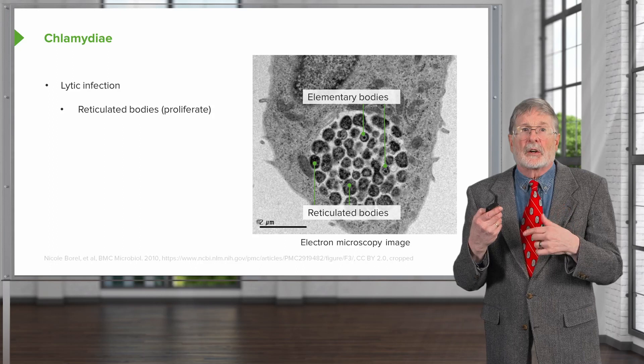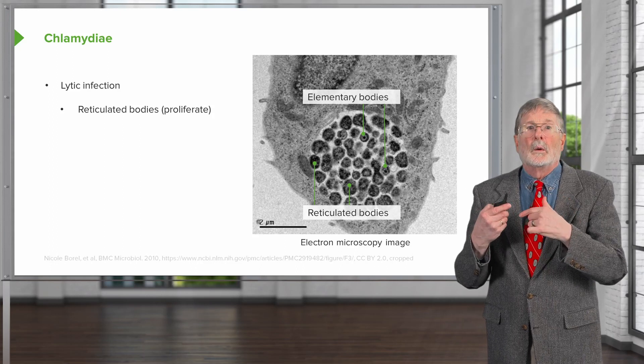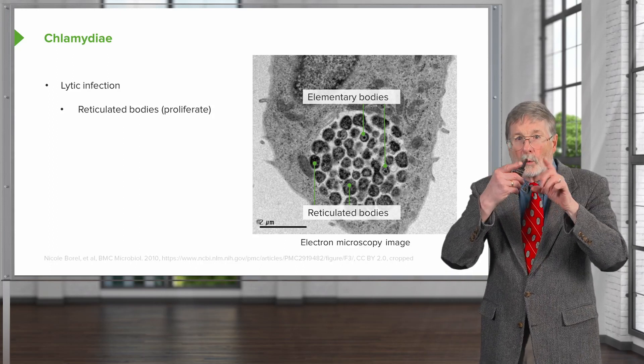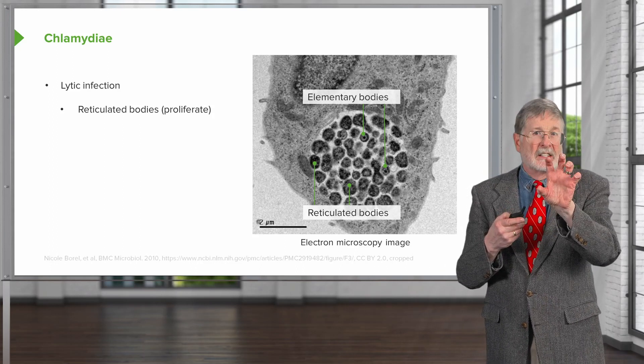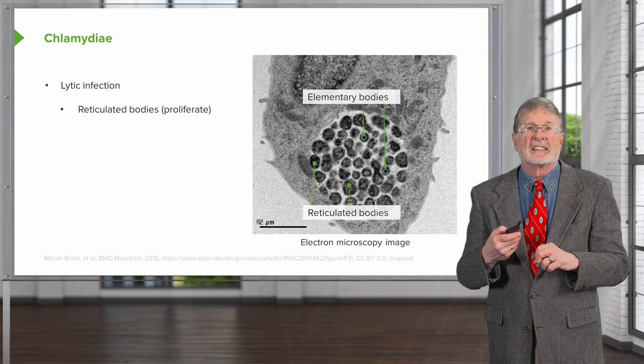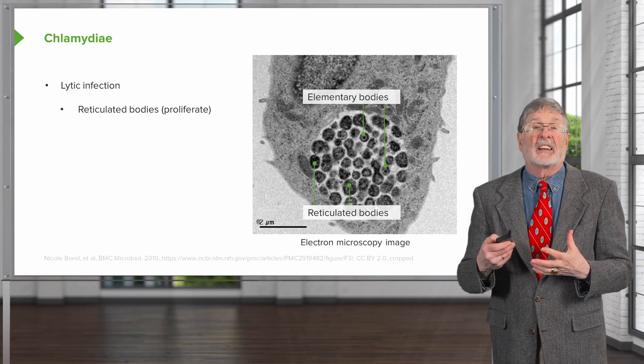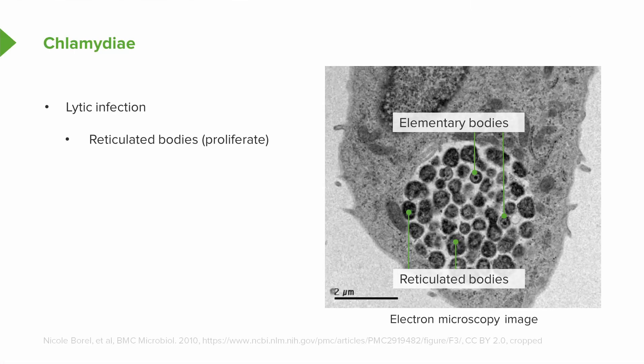The lytic infection occurs when it grows within the cell, as you can see on the right-hand side — reticulate bodies. These reticulate bodies are slightly larger and proliferating, but they will mature into elementary bodies that then can exit when the cell ruptures and infect the next cell. Those are the infective particles.